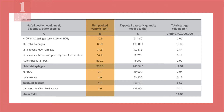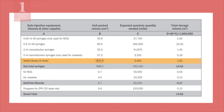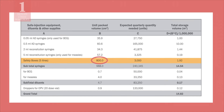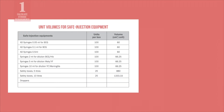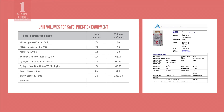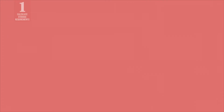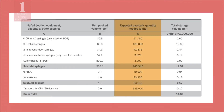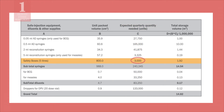This volume can vary depending on product and packaging. In this example, the unit packed volume of a safety box is 800 cubic centimeters. Your program may provide a table listing the unit volumes for commonly ordered safe injection equipment. You can also find this information in the WHO or UNICEF product information sheets. Next, record the expected quantity needed for each equipment type for the period. Here, the expected quarterly quantity of safety boxes needed is 3,000.